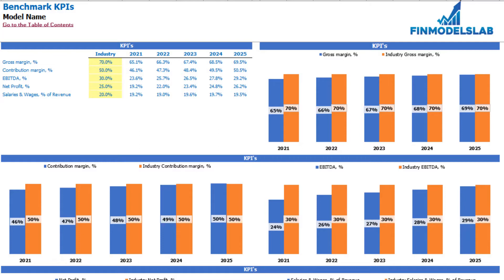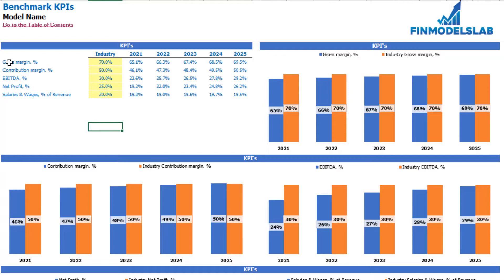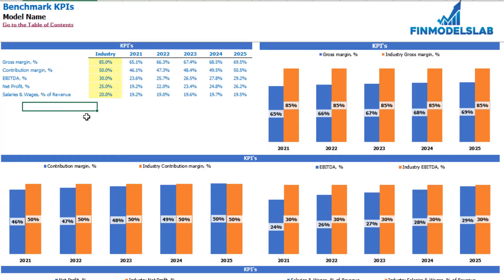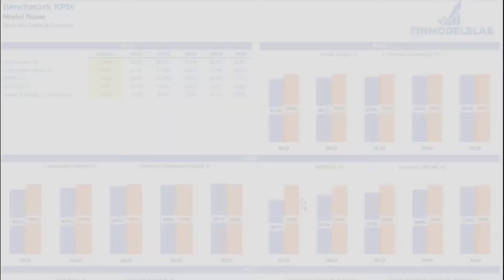On the benchmarks KPI tab you can compare your financial outputs with your industry benchmarks. There are five benchmarks: gross margin, contribution margin, net profit, EBITDA, and salaries and wages as a percentage of revenue. In the model-output cells you see the values produced by the model after setting up all drivers. In the yellow cells you input your industry benchmarks — for example, a gross margin of 85% for your industry. Below, orange columns show industry benchmark values and blue columns show model values for easy graphical comparison.